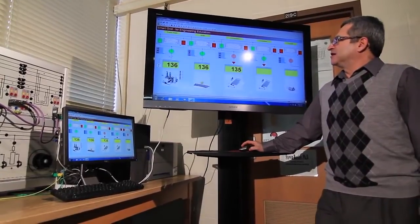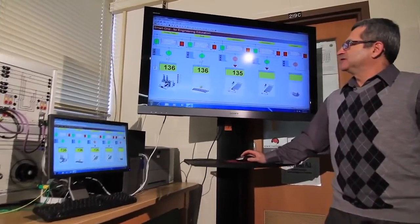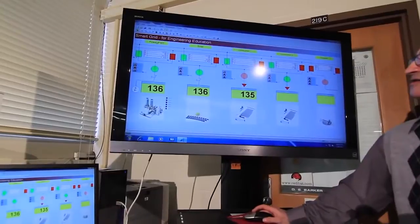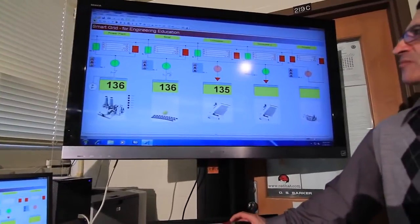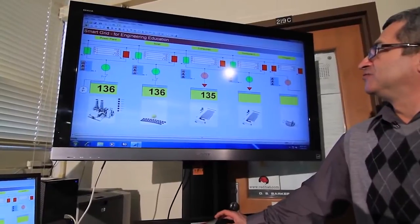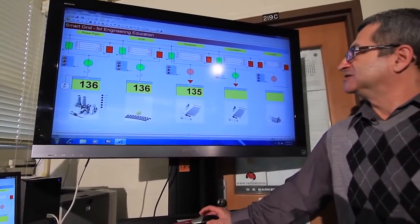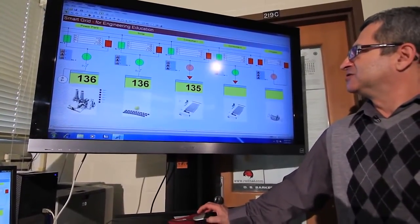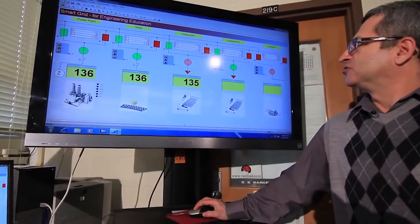Right now the power is coming from the utility to the bus bar, from the solar power plant to the bus bar, and then we have several consumers connected to these buses. Let's say here is an industrial plant and we want to launch this plant.